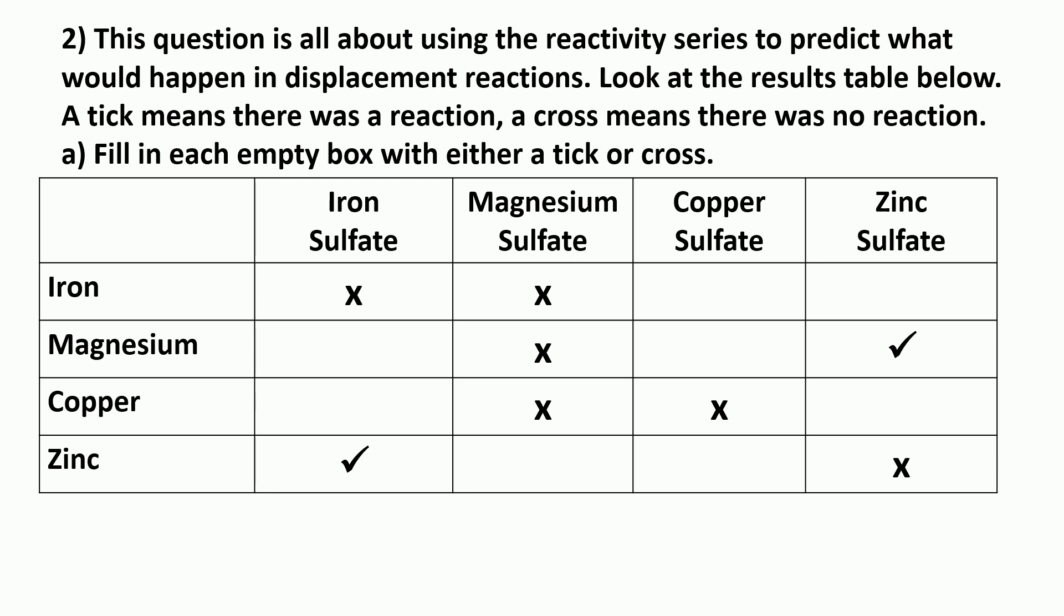So if we work our way across the first line, iron and copper sulfate. Iron is higher up the reactivity series than copper, which means it's more reactive than copper. So it can take the sulfate from copper, in other words it can displace copper. So that would be a tick.